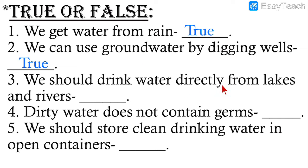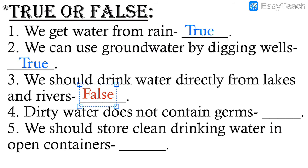Number three: We should drink water directly from lakes and rivers — we should not, because lakes and rivers do not have pure water. We should first purify the water then drink it. So this is false — lake water and river water is not clean, it is not pure and not drinkable directly.